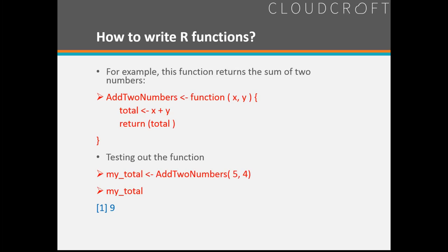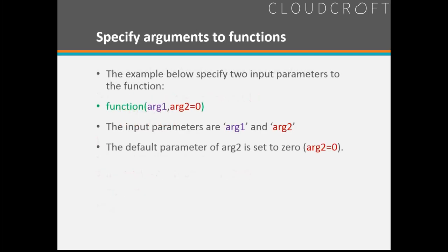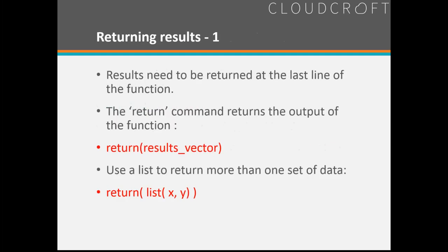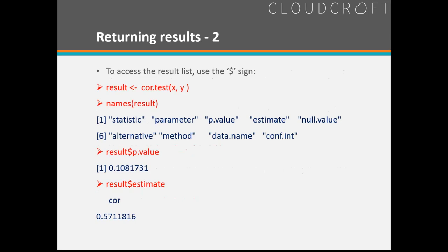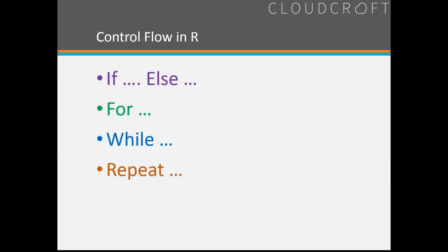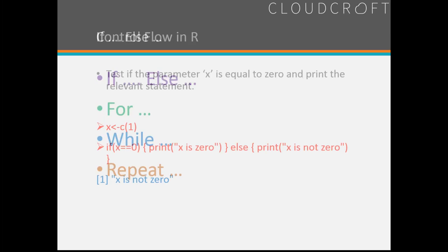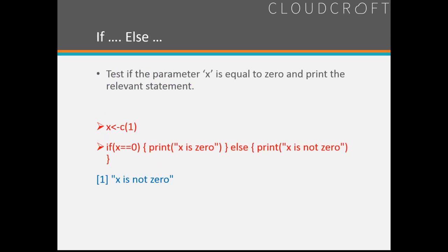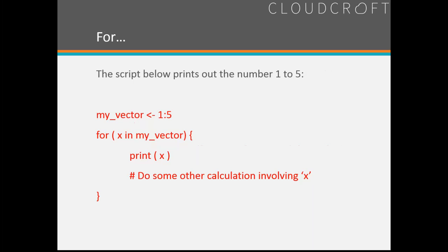How to write R functions: here we have creating a function to add two numbers, then you can run it and get a total. You have to specify arguments — it's very similar to coding in other languages. Flow controllers include if/then/else statements, for, while, and repeat statements, allowing us to flow through. We have looping statements, if/else for normal branching-type testing — if it happens one way, go one direction; if another way, go another.